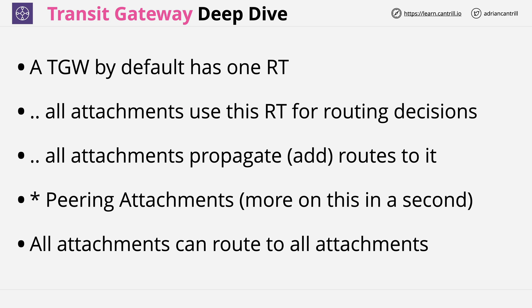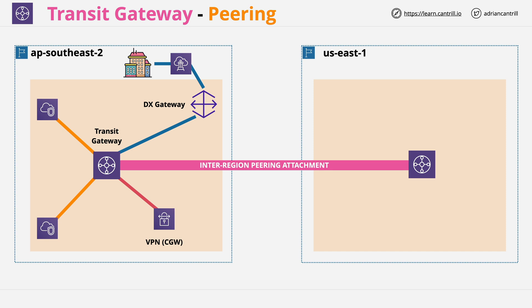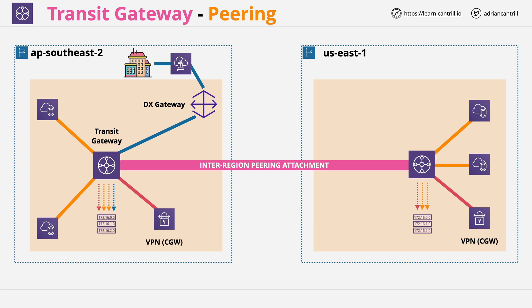Let's talk more about Transit Gateway peering attachments across regions. We have the AP Southeast 2 and US East 1 regions, and between them an inter-region peering attachment between the two Transit Gateways. The Transit Gateway on the left is connected to the same two VPCs, the DX Gateway via a Transit VIF, and the Customer VPN using a VPN attachment. On the right, this Transit Gateway has a similar set of attachments, only without the Direct Connect. Both sides are adding their learned routes — the prefixes — to their own default route table, which is added to by all attachments connected to that single Transit Gateway and used by all attachments on that single Transit Gateway.